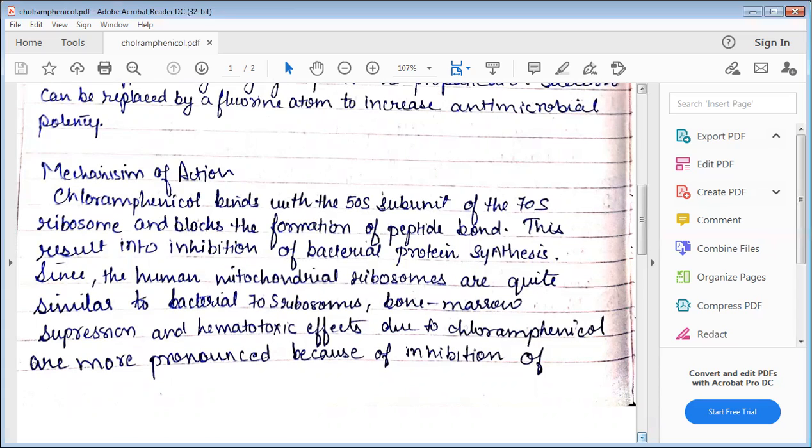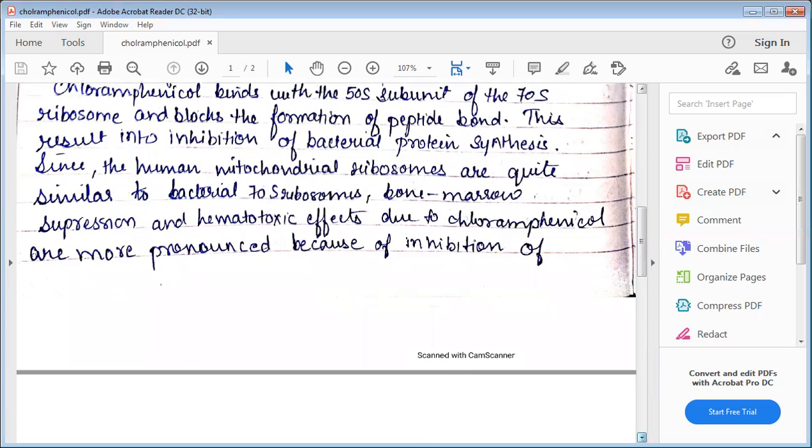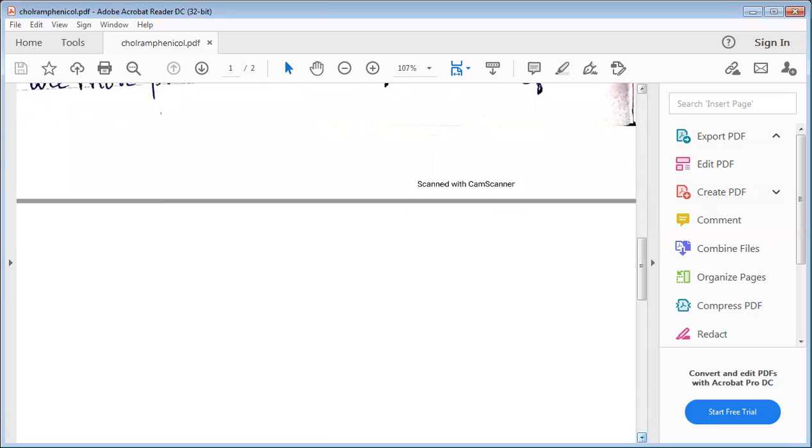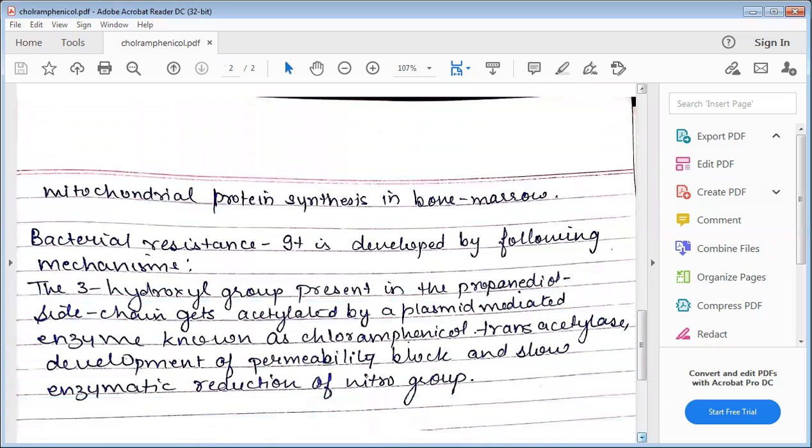Since the human mitochondrial ribosomes are quite similar to bacterial ribosomes, some people have a sensation in bone marrow. So chloramphenicol is not more pronounced because of the inhibition of the mitochondrial protein synthesis in bone marrow.